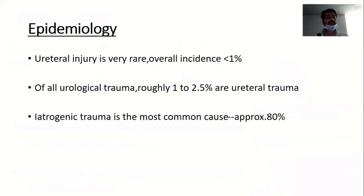Although ureteric injury is relatively rare because of its small size, mobility, and its position in the retroperitoneum well protected by surrounding muscles and bones, the overall incidence of ureteric injury in trauma is less than one percent. Of all urological trauma, ureteral trauma constitutes about 1 to 2.5 percent. Iatrogenic trauma is the most common cause, accounting for approximately 80 percent of ureteral injury cases.